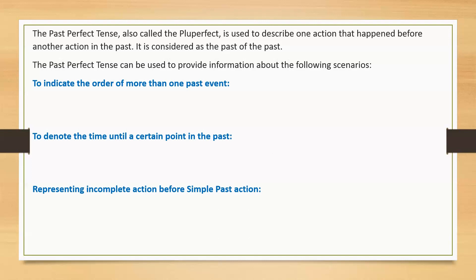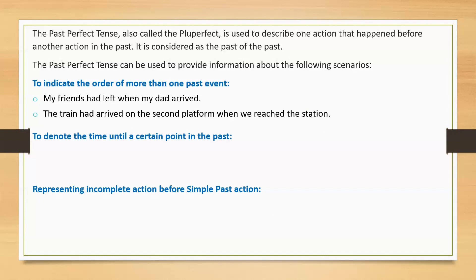Let's consider sentences indicating the order of events in the past. My friends had left when my dad arrived. The train had arrived on the second platform when we reached the station.